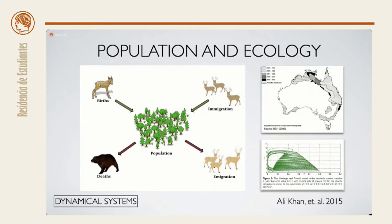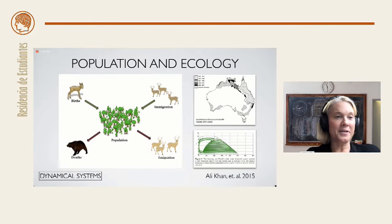Populations of animals evolve over time according to rules determined by birth rate, migration patterns, food supply, and predation. Dynamical systems are used to model the spread of invasive species, as pictured in the upper right, and the population of fisheries on the lower right.